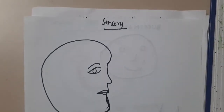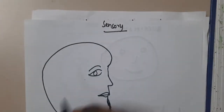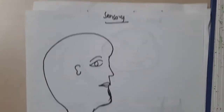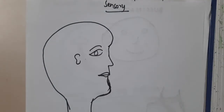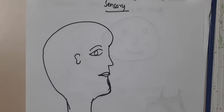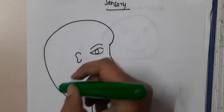For the sensory supply of the face, we have three divisions. The whole face is supplied mainly by the trigeminal nerve, except over the angle of mandible. Let me show you how we can divide this for the nerve supply.